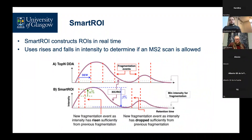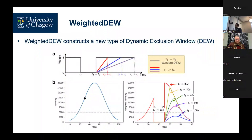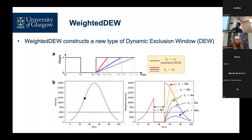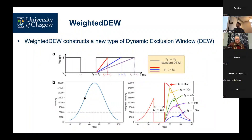We also constructed something called Weighted Exclusion. Instead of having a standard, say, 30-second dynamic exclusion window, you have a shorter exclusion window — 20 seconds, or whatever number you choose — and then an additional parameter that affects how likely we are to re-fragment. We can take different values of this parameter to scale down the fragmentation probability for things still in the same ROI. The weight scales from one (able to fragment) to zero (fully excluded), with our half-way effect in between.